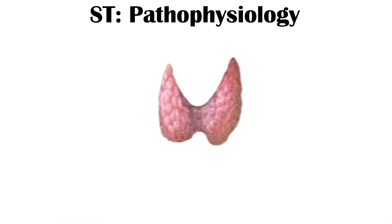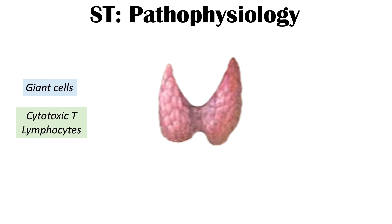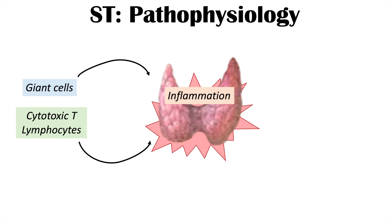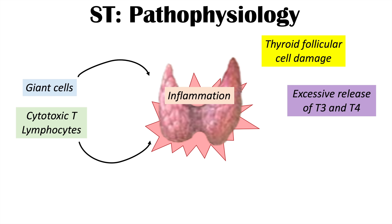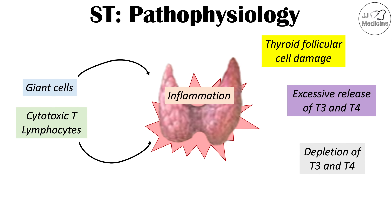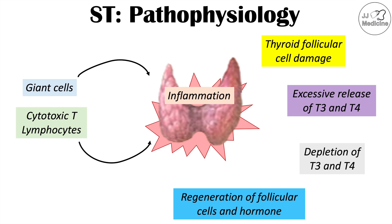Let's talk about the pathophysiology of subacute thyroiditis. Giant cells — which are a conglomeration of macrophages, other immune cells, and cytotoxic T lymphocytes — will infiltrate into the thyroid gland causing inflammation. That inflammation causes the thyroid follicular cells to become damaged. These carry a lot of preformed thyroid hormone like T3 and T4, so there's going to be excessive release of these hormones — not an overproduction, but an excessive release of preformed thyroid hormone. Eventually all of that hormone is dumped into circulation and becomes depleted, then it takes time for regeneration of follicular cells and thyroid hormone.